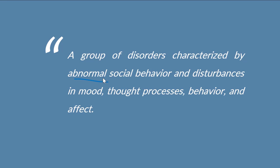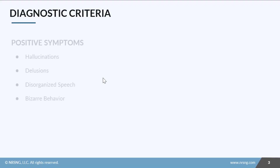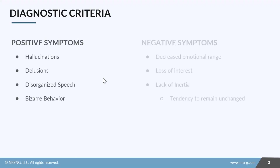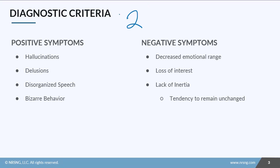We'll talk about the different types in the next lesson, but in this lesson I just want to talk about the general symptoms and nursing interventions for all types of schizophrenia. To be diagnosed with schizophrenia, a client needs to have at least two of the following symptoms, and at least one of those has to be a positive symptom.